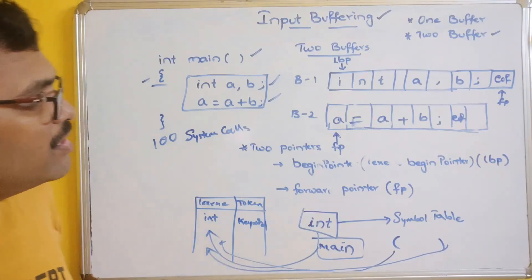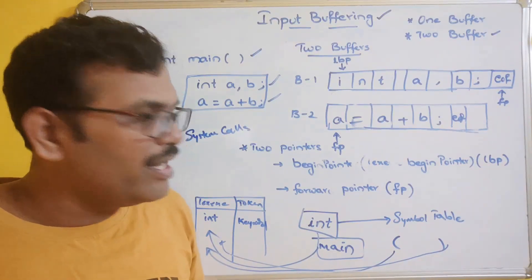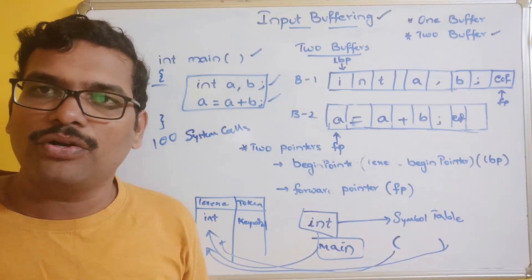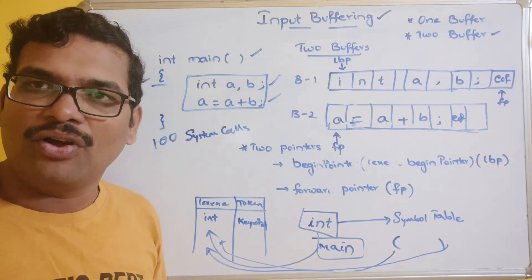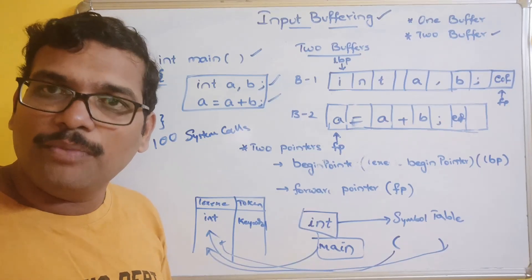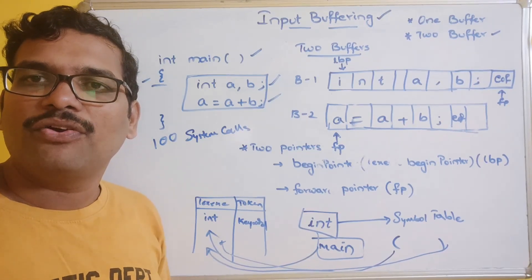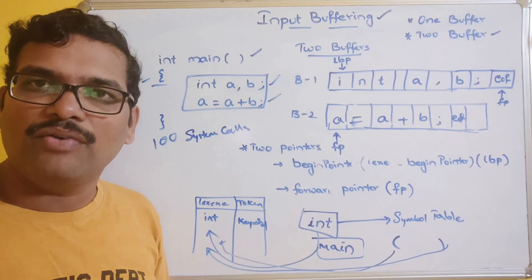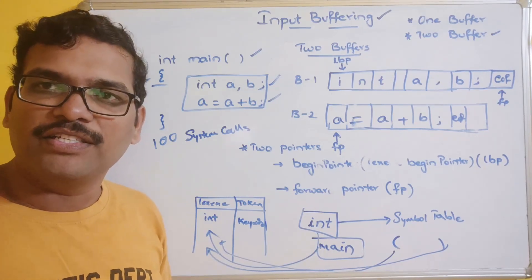This is how a program is sent to the lexical analyzer, and by using input buffering the complete symbol table is developed where we can get all the tokens — the list of all the tokens. If you have any queries feel free to post your doubts in the comment section. If you enjoyed the session, like, share with your friends, and don't forget to subscribe to our channel. Thanks for watching.